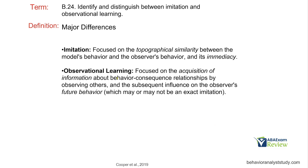Major differences: imitation is focused on topographical similarity between the model behavior and the observer behavior, and immediacy. Observational learning is focused on acquisition of information about contingencies and how it affects the observer's future behavior, which may or may not be exact imitation. We've covered the same ideas many different ways because it's not a complex topic — but observational learning, being relatively new to most people, can get a little tricky.